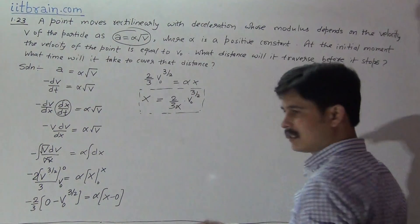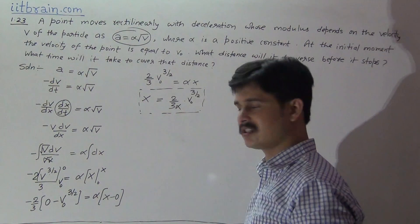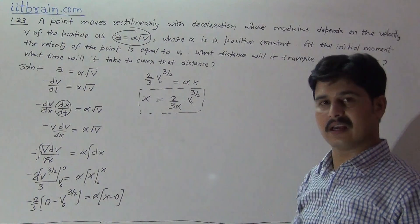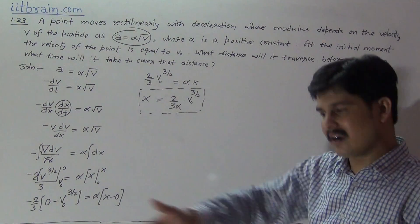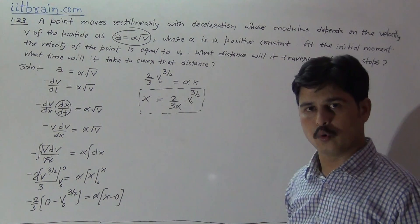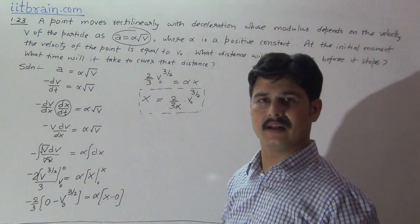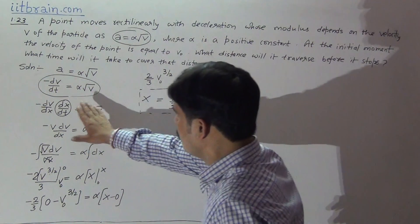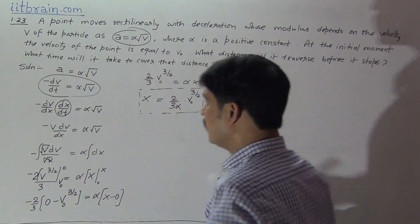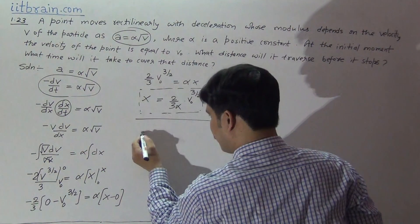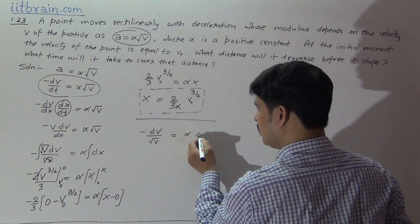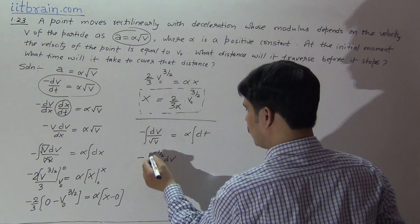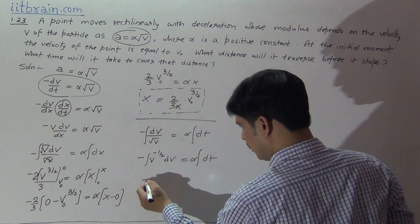Now the second part: what time will it take to cover that much distance? For calculating time, we go back to minus dv by dt equal to alpha root v. So minus dv by root v is alpha dt. Taking integration on both sides directly, you will get v to the power minus half dv equal to alpha dt.